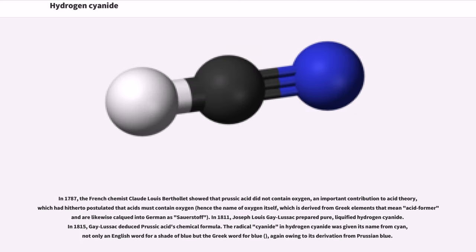In 1787, the French chemist Claude Louis Berthollet showed that prussic acid did not contain oxygen, an important contribution to acid theory which had hitherto postulated that acids must contain oxygen. In 1811, Joseph Louis Gay-Lussac prepared pure liquefied hydrogen cyanide. In 1815, Gay-Lussac deduced prussic acid's chemical formula. The radical cyanide in hydrogen cyanide was given its name from cyan, the Greek word for blue, again owing to its derivation from Prussian blue.